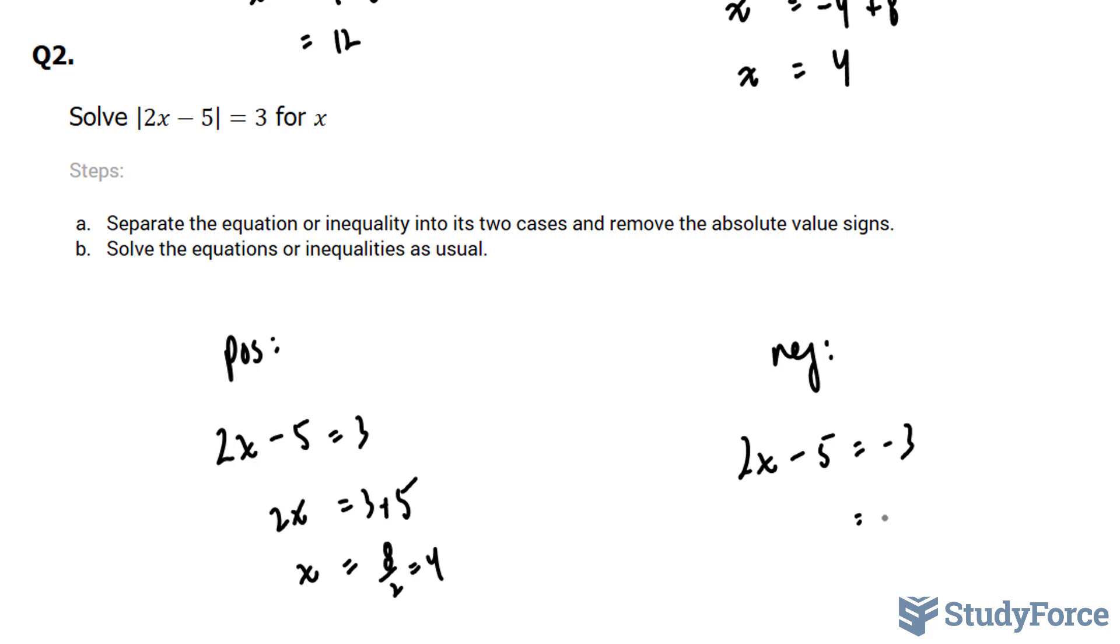And in this case, bringing this 5 over gives you positive 2 on the right side, and on the left side, this remains the way it is. x is equal to 2 over 2, which is equal to 1.